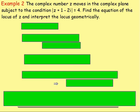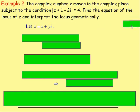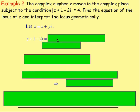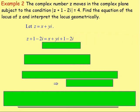Example two: the complex number z moves in the complex plane subject to the condition |z + 1 − 2i| = 4. Find the equation of the locus of z and interpret the locus geometrically. Again, because we've got a complex number z, let z equal x + yi. We have the modulus of z + 1 − 2i. Forget the modulus just now — rewrite z + 1 − 2i: substituting z = x + yi gives x + yi + 1 − 2i.